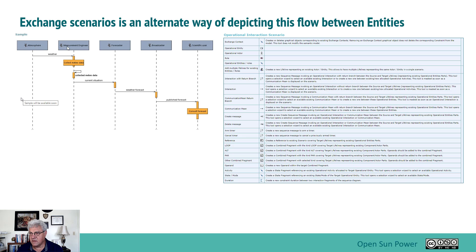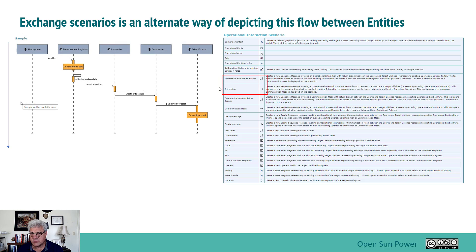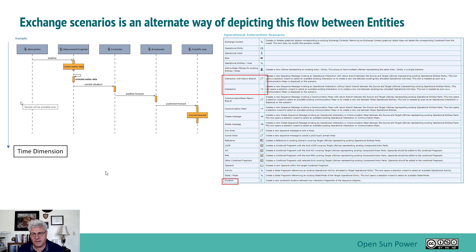In the entity-based example from the textbook, you see atmosphere, measurement engineer, forecaster, broadcaster, and scientific user. The interactions are depicted as the things between them, and you read the diagram from top to bottom — that's the time dimension. You can put in duration to indicate how long it takes from one flow to the next. This notation is very common for helping people understand how software interacts, and you'll see interactions with a return, which implies some type of software behavior.